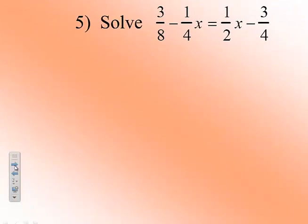All right. So for those of you that have paused the video and restarted and we're going to continue notes or in class, our first equation is 3 eighths minus 1 fourth x equals 1 half x minus 3 fourths.